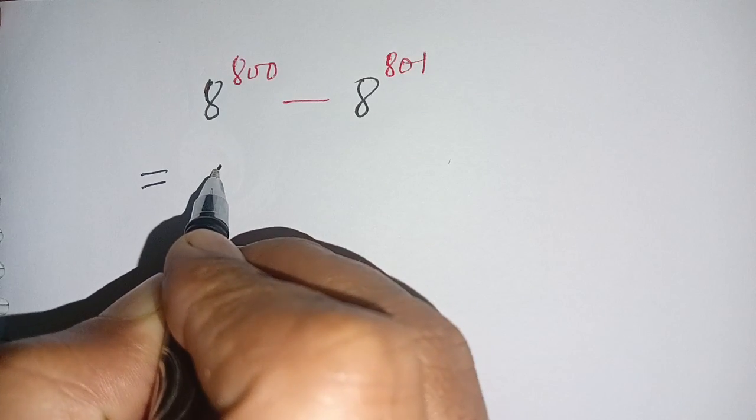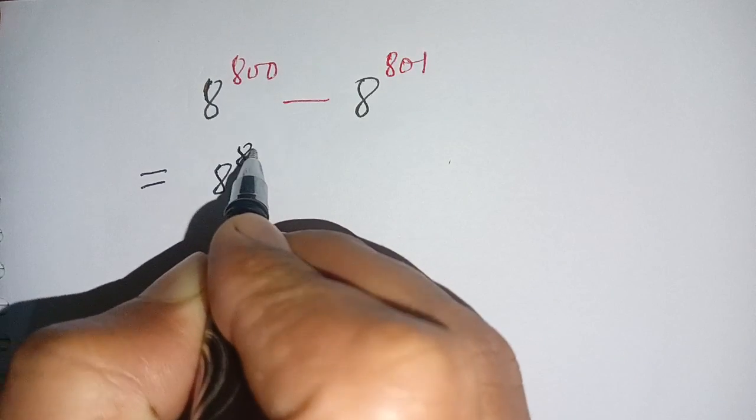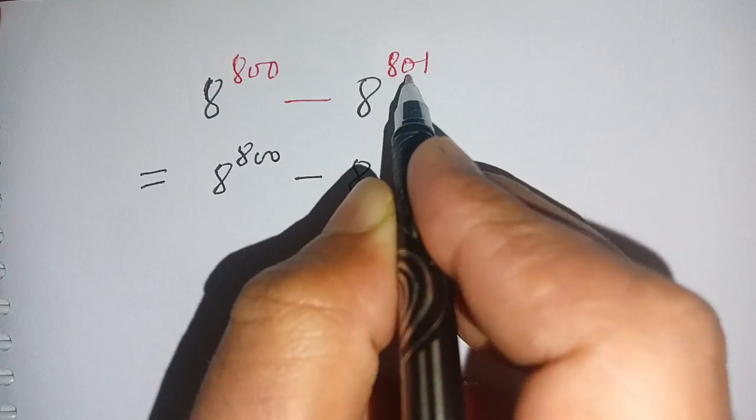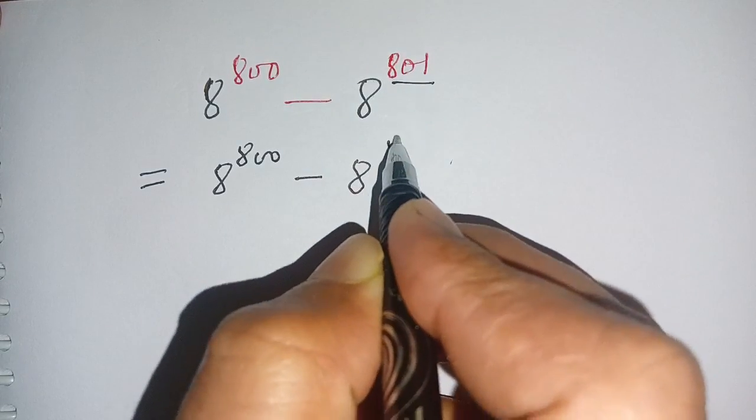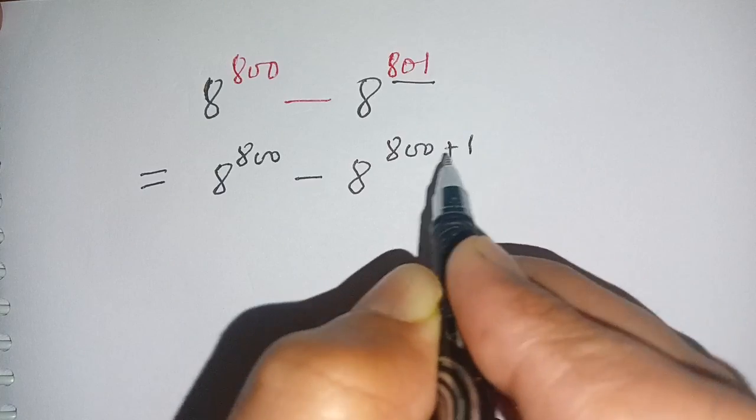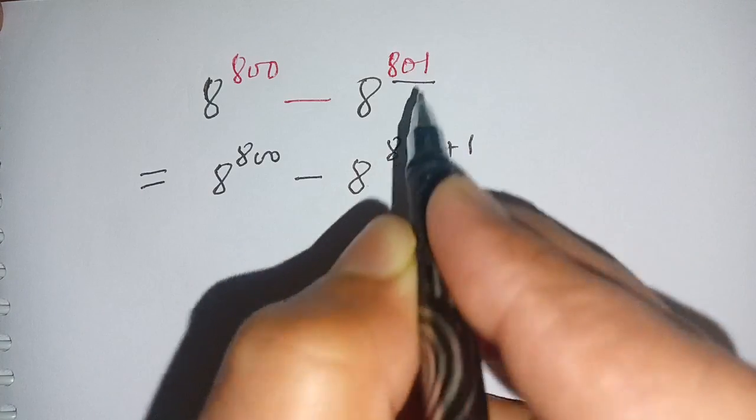We write this as 8 power 800 minus 8 power 801, which can be written as 8 power 800 plus 1. 800 plus 1 becomes 801.